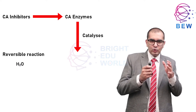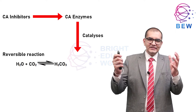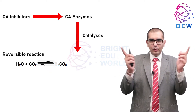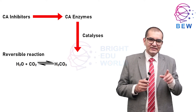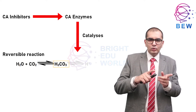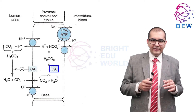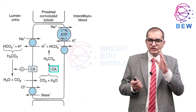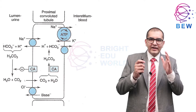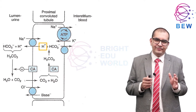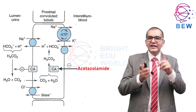The reaction is: H2O plus CO2 gets converted to H2CO3. This is a reversible reaction, meaning it can go both ways. Carbonic acid spontaneously ionizes — H2CO3 to H+ and HCO3 minus. Carbonic anhydrase thus functions in CO2 and HCO3 transport and in H+ ion secretion.